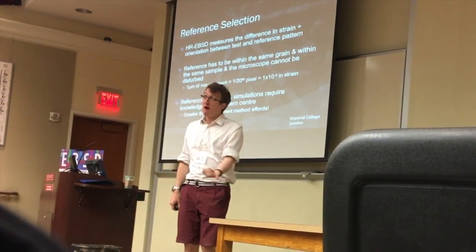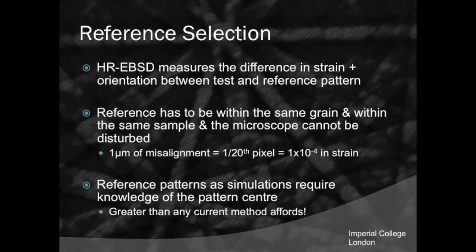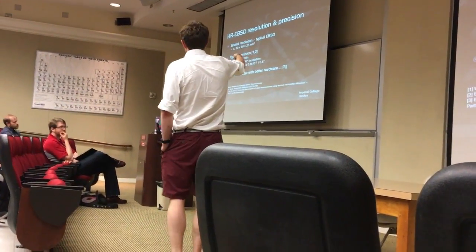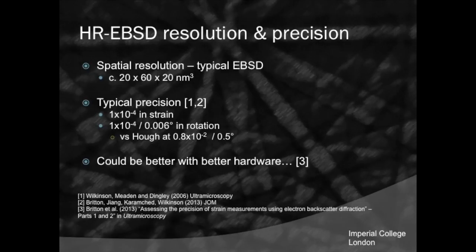We've looked at how we compare two diffraction patterns. The measurement technique measures the relative difference in strain states between the test and reference pattern. The precision easily accessible in most systems is 1 times 10 to the minus 4. We can achieve better with very nice diffraction patterns — in some germanium we've reached 2 times 10 to the minus 5 — and this could improve further with better hardware.